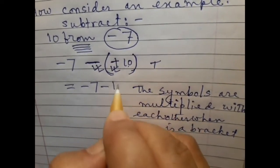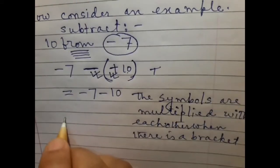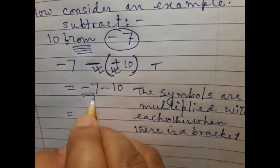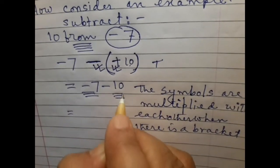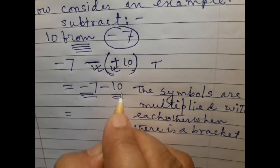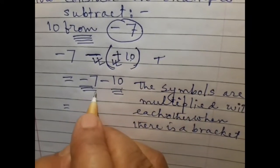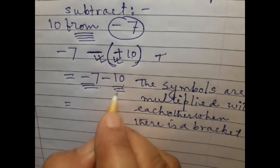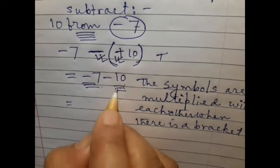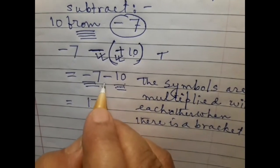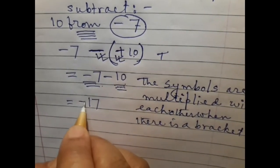And number is here 10. Here there is same symbol between two digits. So we add the absolute values. 7 and 10 is 17. And the prefix will be minus.